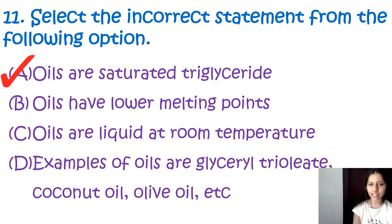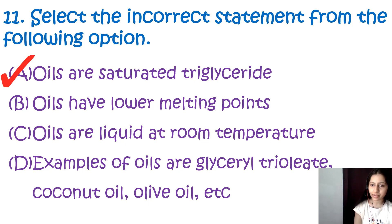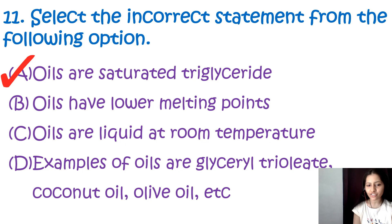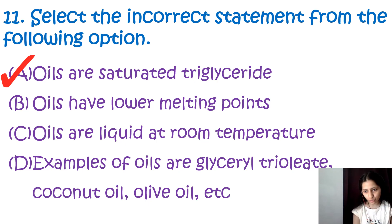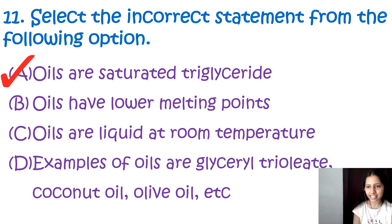This statement is incorrect because oils contain both saturated and unsaturated triglycerides. The other options are correct: oils have lower melting points, oils are liquid at room temperature, and glycerol triolate, coconut oil, and olive oil are examples of oils. The term 'oil' refers to a physical state — liquid at room temperature — rather than a specific chemical composition. Therefore, option A is the incorrect statement.